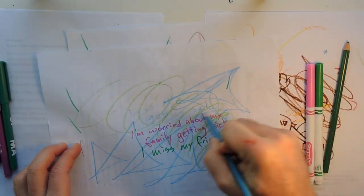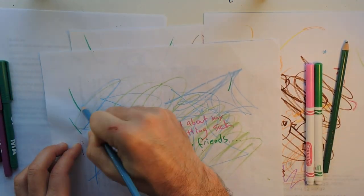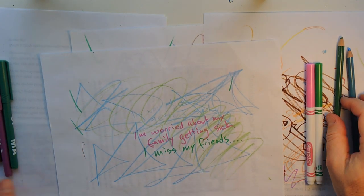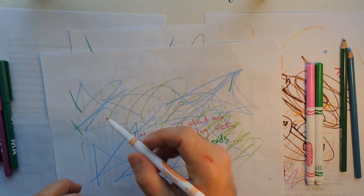We just want to try different types of scribbling. There's tornado scribbling, zigzag scribbling, some of it's pointy, some of it's wavy.